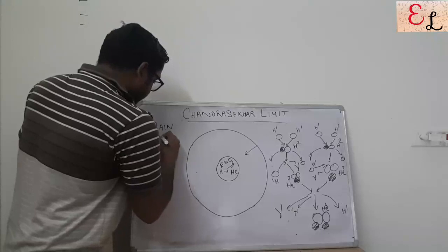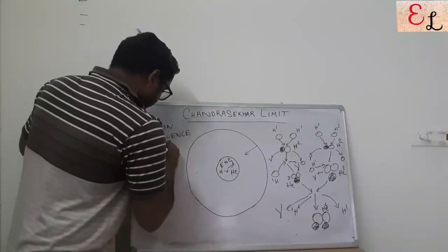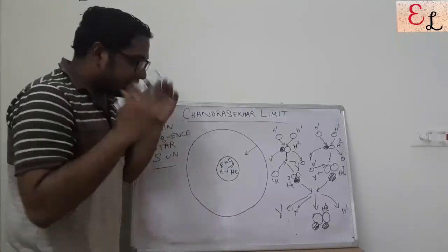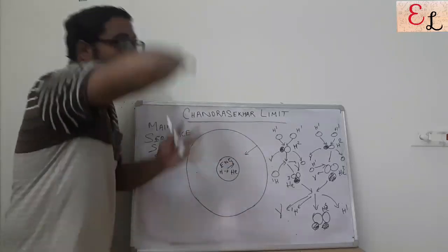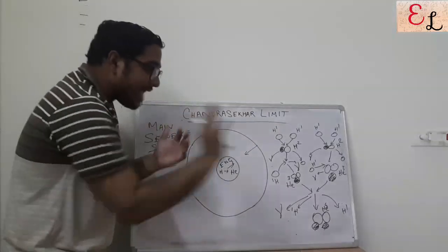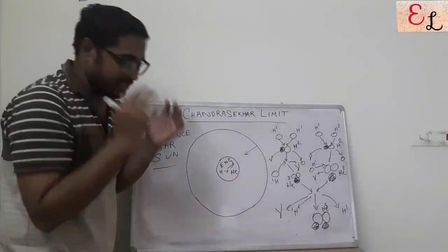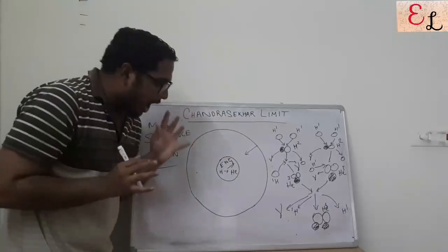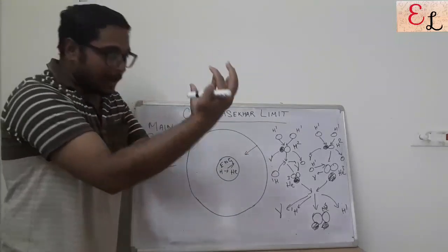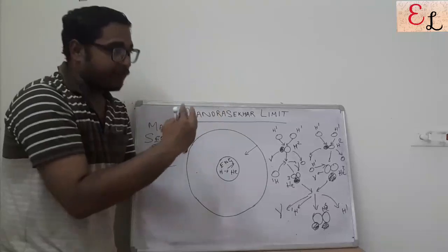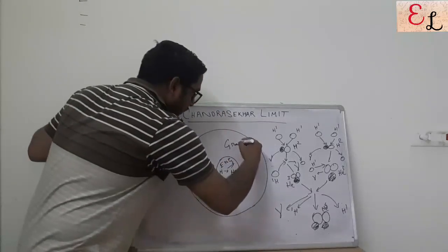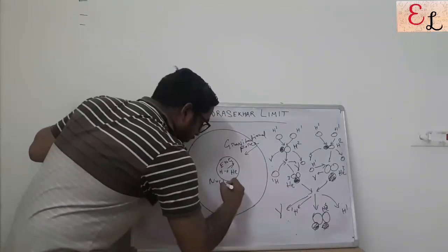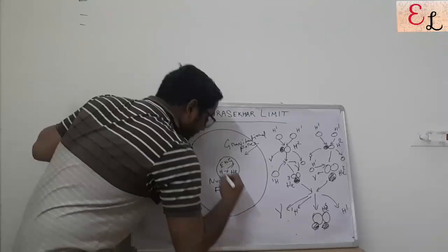First we are going to talk about the main sequence star. A main sequence star is something like our sun - the sun is a main sequence star. A main sequence star balances, or neutralizes, the gravitational pull of its entire mass through its reaction energy. Whatever reaction is taking place in the core of the sun produces a pressure energy which is exerted outward. The entire mass of the sun, which has a gravitational tendency to collapse, is balanced by the nuclear fusion reaction taking place within the sun.